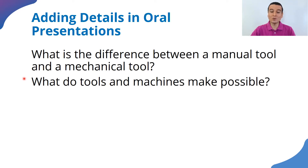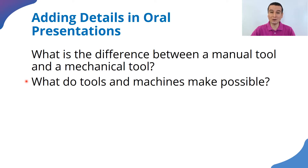What do tools and machines make possible? At the end they said that with machines and tools we can modify materials in a way that we would not be able to do with our bare hands.